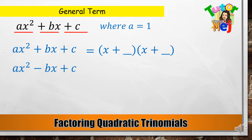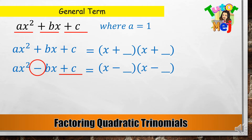AX squared minus BX plus C equals (X minus a factor of C) times (X minus another factor of C). Positive ulit ang ating C dito, ibig sabihin pareho ang magiging sign ng ating factors of C. Ito ay nakabase sa sign ng ating middle term, which is now negative. Kaya meron silang parehong negative factors.